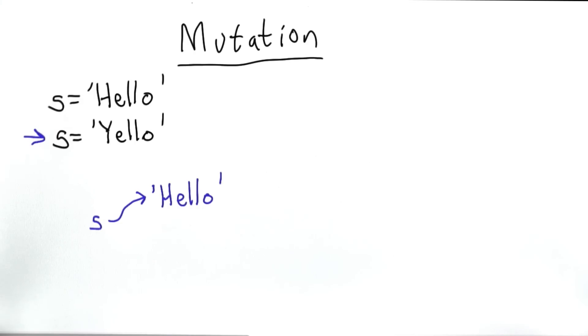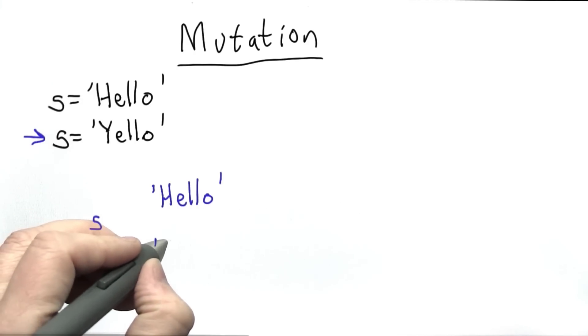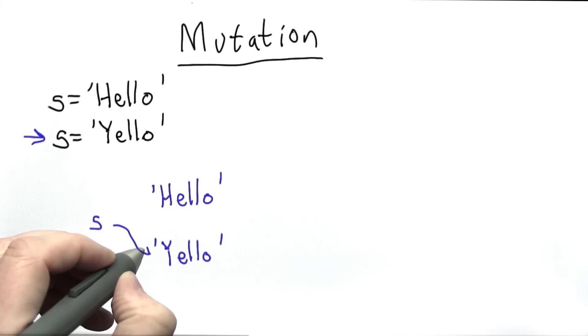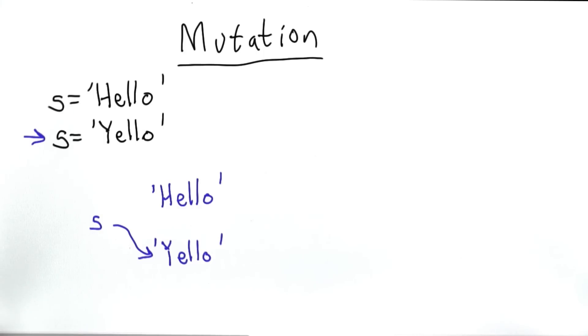When we execute the second statement, that creates a new string with the value yellow, and it changes s to refer to that new string. It hasn't changed the string that we created with the value hello. We just don't have a way to refer to that anymore.